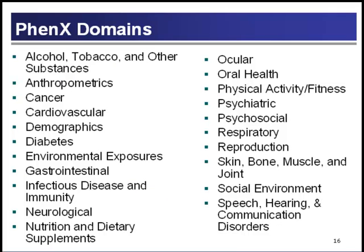These are the 21 Phoenix domains. Once the project was funded, we organized a steering committee with expertise in genomics of complex diseases, genetics, epidemiology, and statistics. The committee is chaired by Jonathan Haynes from Vanderbilt University and provides overall guidance, selecting the domains we'd focus on. The NIH Office of Behavioral and Social Science Research committed funds for the 21st domain — the social environment domain — which complements the psychosocial and environmental exposures domains. We then began assembling expert working groups to do the hard work of reviewing existing measures and selecting the most useful standard measures for each research domain.